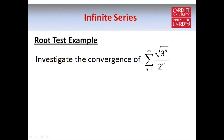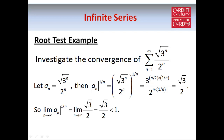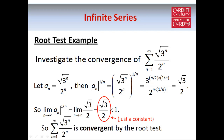Here's one example. Our terms in the series are given by the square root of 3^n over 2^n. If we take the nth root of 3^n/2^n, then using some rules of indices we get √3/2, which is just a constant with no dependence on n. Therefore, when we take the limit as n tends to infinity, we're just taking the limit of a constant, so we get √3/2. Since this is smaller than 1, we can say that by the root test the series is convergent.